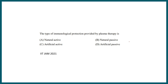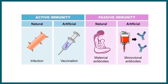In IIT JAM 2021, a similar question asked: the type of immunological protection provided by plasma therapy — natural active, natural passive, artificial active, or artificial passive? The correct option is artificial passive. Active immunity forms through natural infection or vaccination. Passive immunity is antibody-mediated — immune modulators are injected into the body either from mother to infant or artificially via plasma therapy.